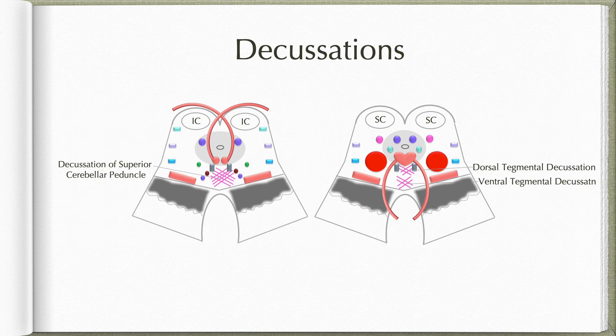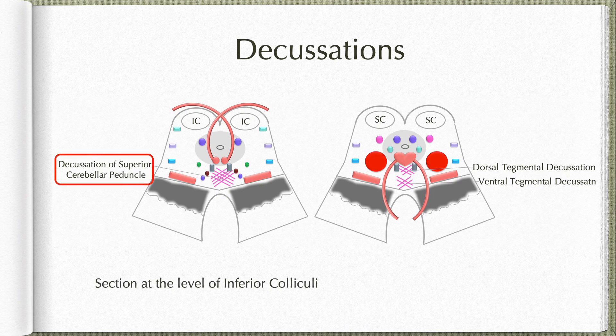Coming to the decussations found in the midbrain: at the level of inferior colliculi, we find the decussation of superior cerebellar peduncle fibers, where both the afferent and efferent fibers to the cerebellum will be decussating. One of the afferent fiber bundles decussating here belongs to the ventral spinocerebellar tract, as we had studied in our video on spinocerebellar tracts.